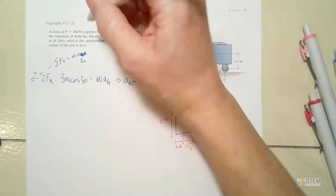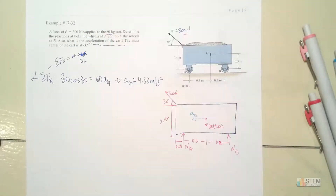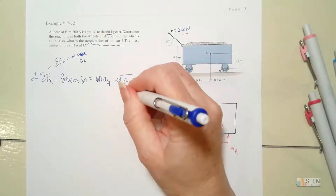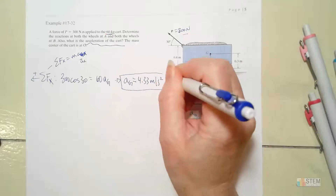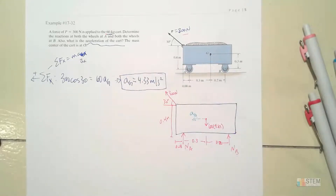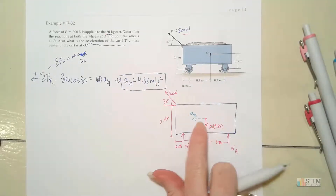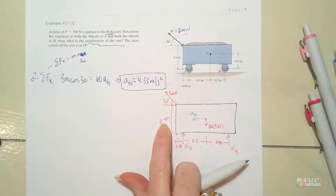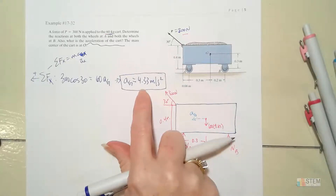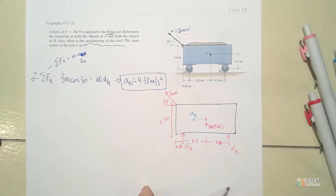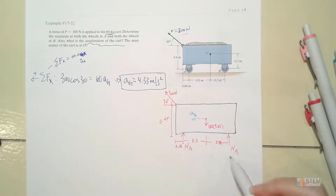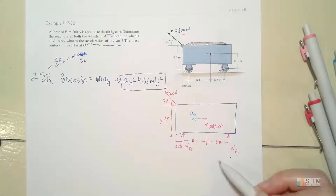That answers the question of what is the acceleration of the cart — that is the acceleration of the cart, because G is moving to the left with this acceleration value. So we found one of our answers. Now I need to find NA and NB, so I have two more unknowns and need two more equations.